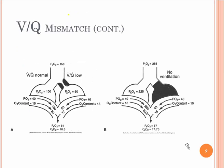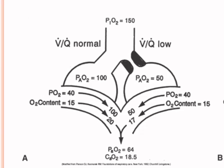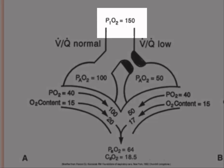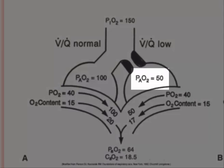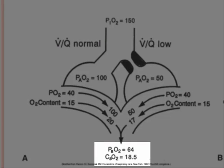A graphic depiction from your book: on the left-hand side, we have a PIO2 of 150 — meaning the pressure of inhaled oxygen is 150. With part of the left side having a low VQ ratio, the alveolar pressure is 50 on the left side and alveolar pressure on the normal side is 100. When you average those two together, what comes out is an arterial tension of 64 and an arterial content of 18.5.